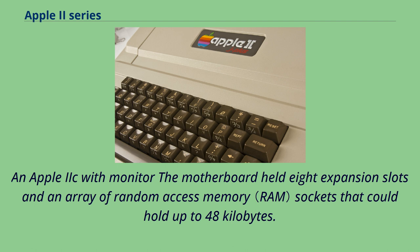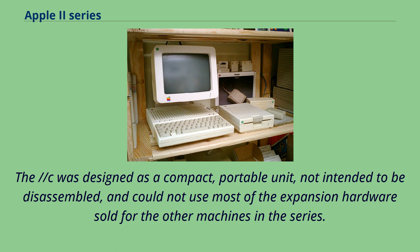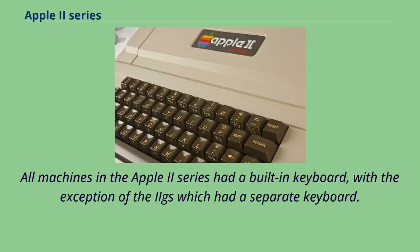Over the course of the Apple II series life, an enormous amount of first- and third-party hardware was made available to extend the capabilities of the machine. The //c was designed as a compact, portable unit, not intended to be disassembled, and could not use most of the expansion hardware sold for the other machines. All machines in the Apple II series had a built-in keyboard, with the exception of the IIgs which had a separate keyboard.